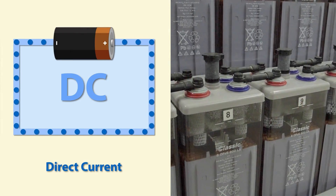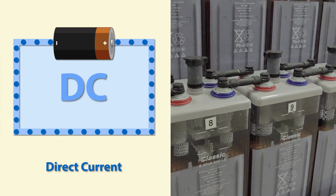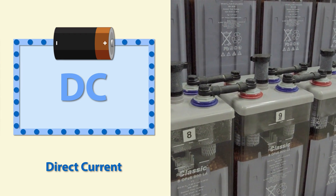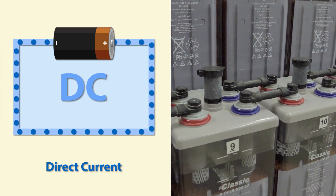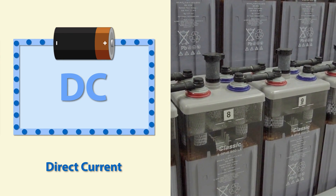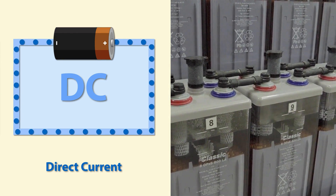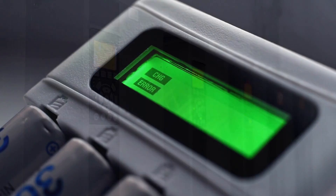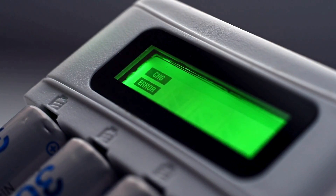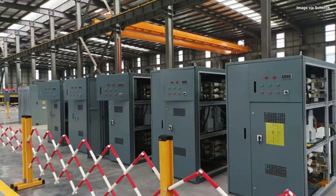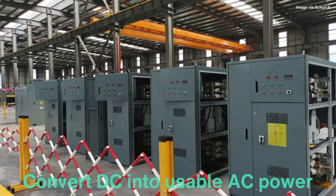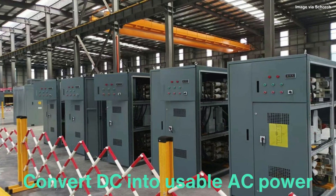On the other hand, direct current is the type of electricity stored in batteries, such as those found in solar power systems, electric vehicles, and portable electronics. In DC power, the electric charge flows in only one direction. While DC is perfect for short-distance applications, it isn't suitable for powering most household appliances, which need AC to function. And this is where voltage inverters come into play — they convert DC into usable AC power.